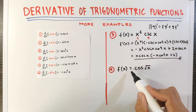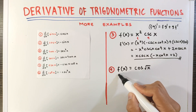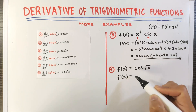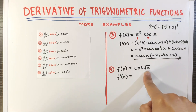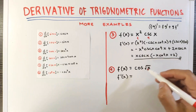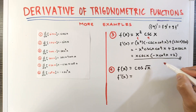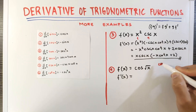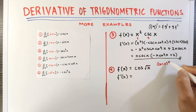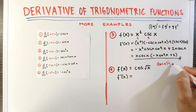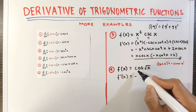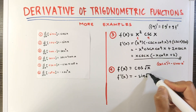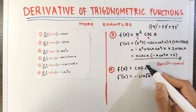For item number 4, we have f of x equals cosine of square root of x. Here, we are going to apply the chain rule for cosine, since the argument of cosine is another function — the square root of x. Using the chain rule, the derivative of cosine u is equal to negative sine u times the derivative of u, the derivative of the inner function.